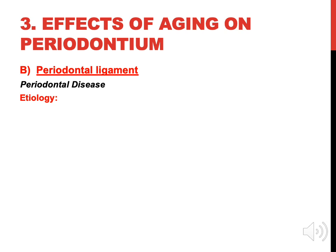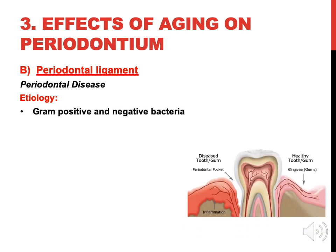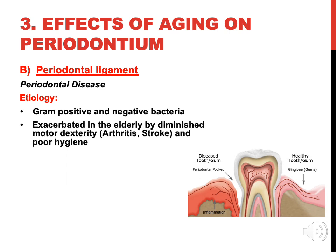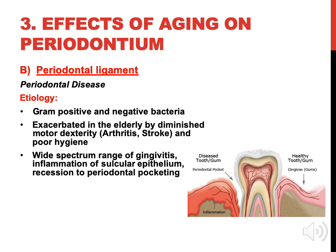Effect on the periodontal ligament: periodontal disease etiology involves gram-positive and negative bacteria, exacerbated in the elderly by diminished motor dexterity like arthritis or stroke, leading to poor oral hygiene. There is a wide spectrum range from gingivitis and inflammation of circular epithelium, leading to recession and periodontal pocketing.